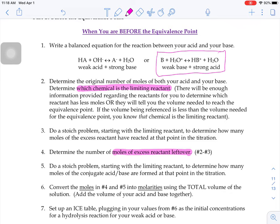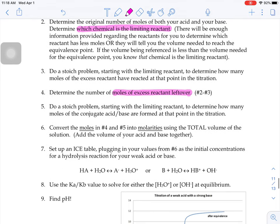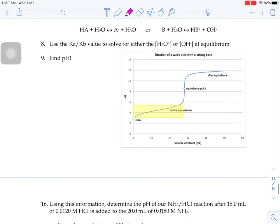Once you have that, you're going to do a stoichiometry problem starting with that limiting reactant to figure out how many moles of the conjugate acid or base are being formed. Convert those moles into molarities. And then there's those ICE tables again to figure out what the H3O+ or the OH- is going to be and solve from there.